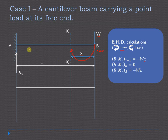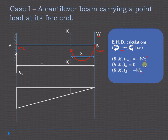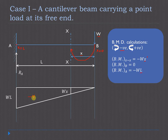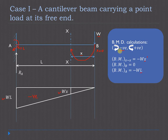At point B, x is 0, so bending moment at B is 0. At point A, x is equal to L, so bending moment at A is minus WL. This general equation is linear in x (power of x is 1), so it will be a straight line. All these bending moment values are negative, so this region is drawn below the baseline. The maximum moment at A is WL, acting in the clockwise direction.